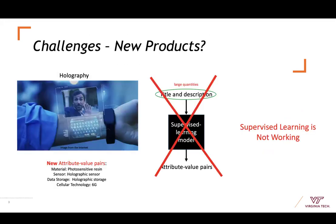However, attribute value information is typically not available for new products. To predict unseen attribute values, large quantities of labeled training data are needed to train a traditional supervised learning model. It is difficult, time-consuming, and costly to manually label large quantities of new product profiles. In this case, supervised learning is not working anymore.